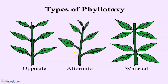Phyllotaxy is the pattern of arrangement of leaves on the stem or branch. This is usually of three types: alternate, opposite and whorled. In alternate phyllotaxy, a single leaf arises at each node in an alternate manner, as in China rose, mustard and sunflower. In opposite phyllotaxy, a pair of leaves arise at each node opposite to each other, as in Calotropis and guava. If more than two leaves arise at a node and form a whorl, it is called whorled phyllotaxy, as in Alstonia.